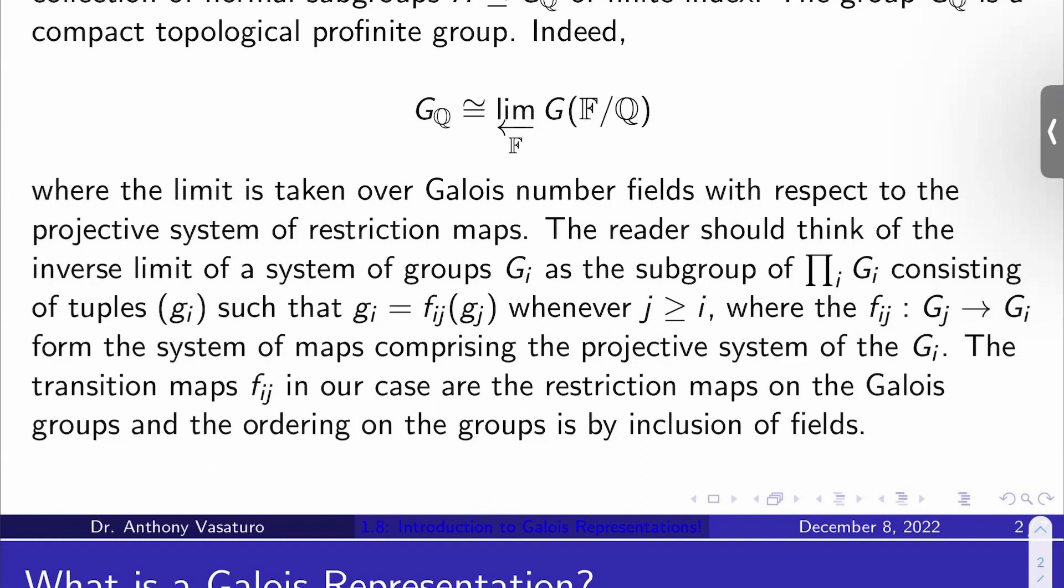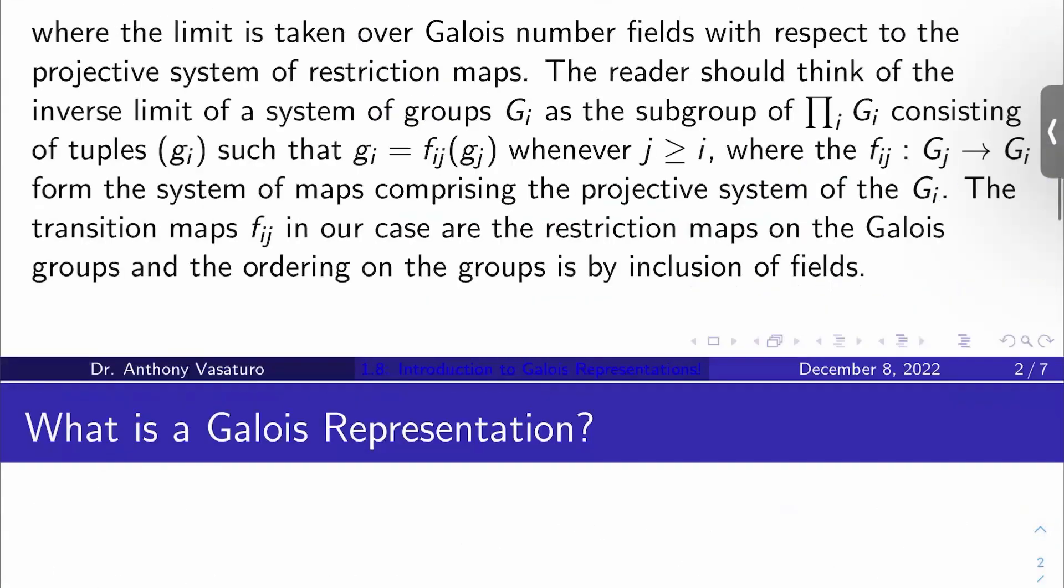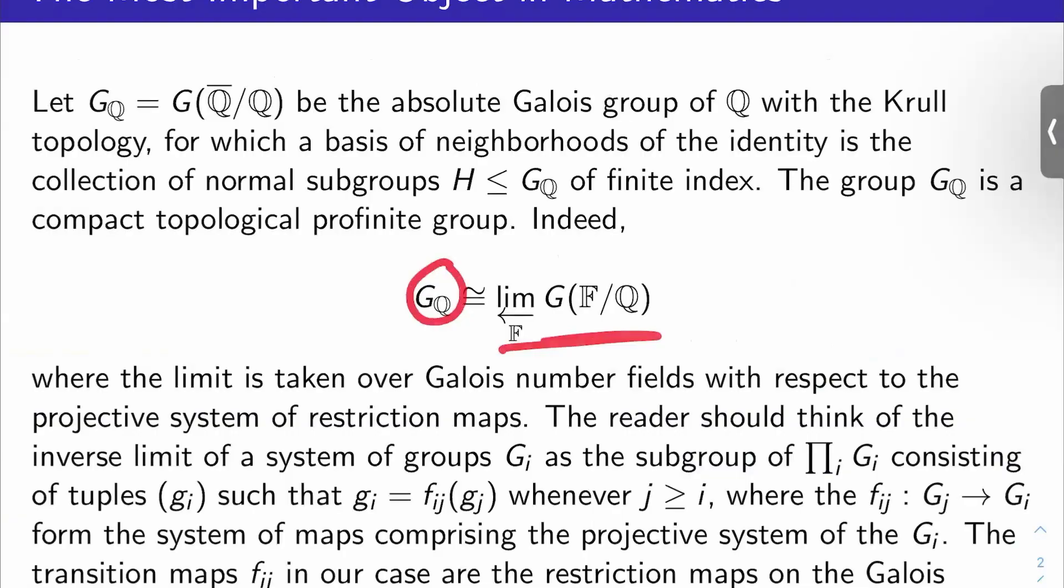And the ordering on the groups is, of course, by inclusion of fields. So that's, this is one way of seeing that you have a profinite group on your hands.